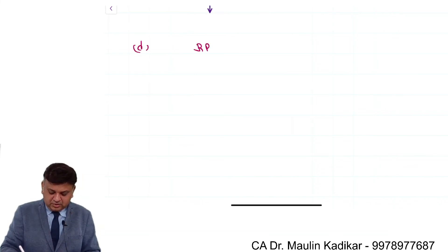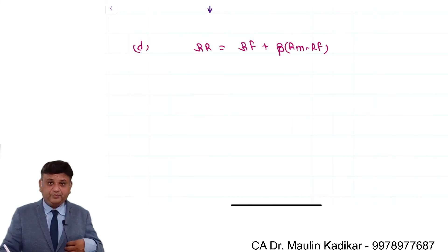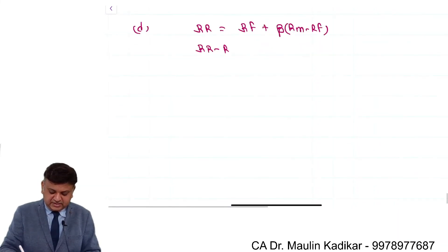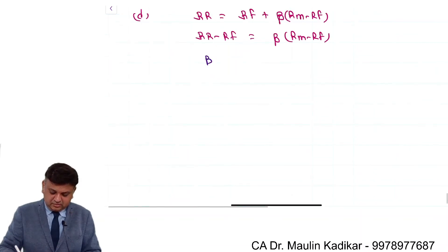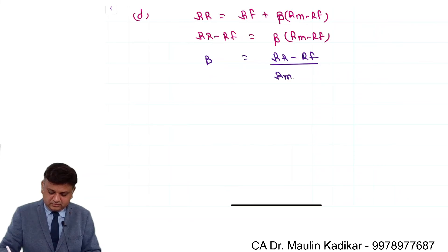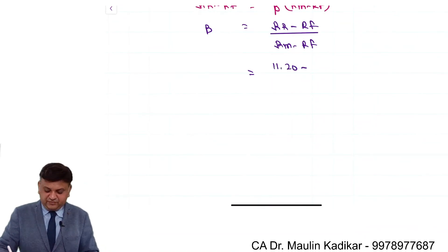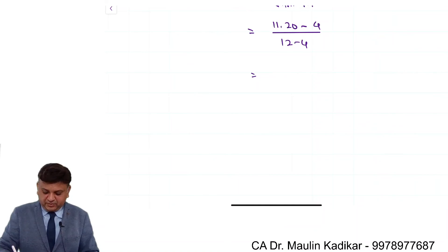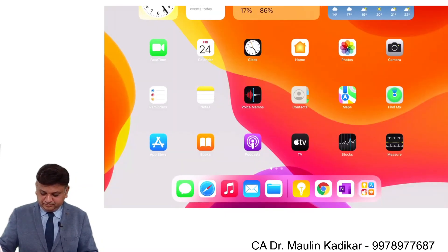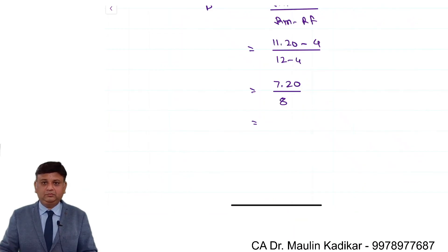Answer of part D: required rate of return = RF plus beta into (RM minus RF). Rearranging: beta = (required rate of return minus RF) divided by (RM minus RF). So beta = (11.2 minus 4) divided by (12 minus 4), which is 7.2 divided by 8, that comes to 0.90.